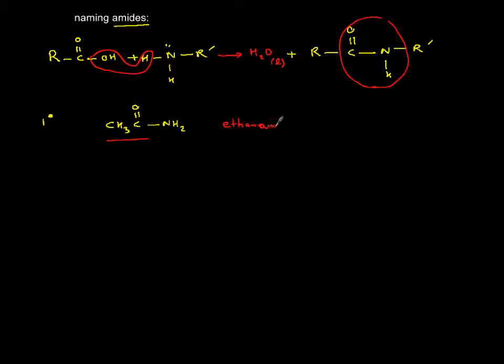If I give you another one, for example, make it a bigger chain: CH3-CH2-CO-NH2. This is propane because you have three members: propanamide.